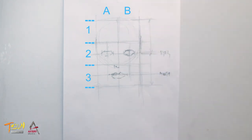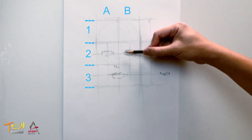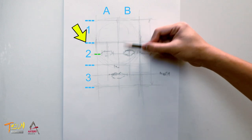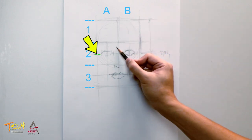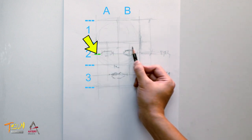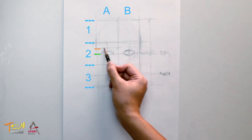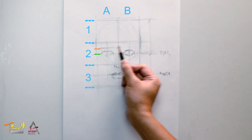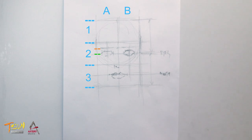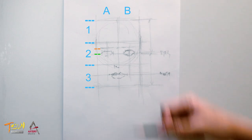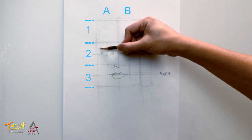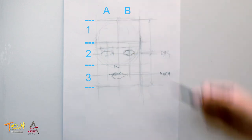Next, the eyebrows. Add a line between the upper blue line and the middle green line in the second grid row — this orange line is the level of the eyebrows. The eyebrows are slightly longer than the eye width. Again, it varies between people.